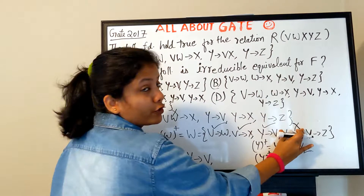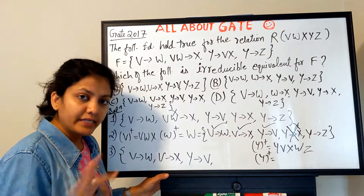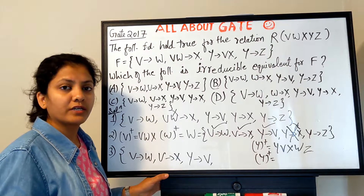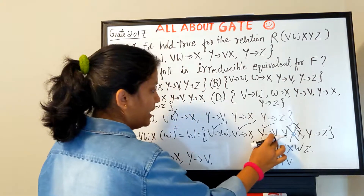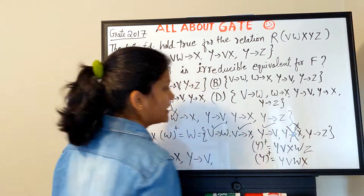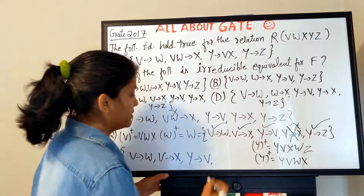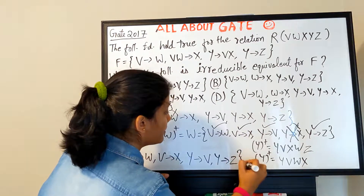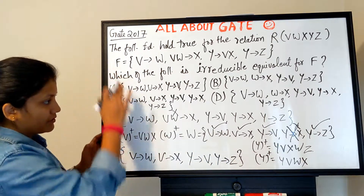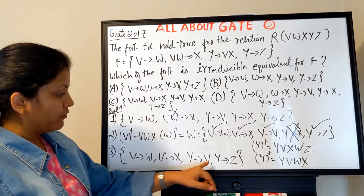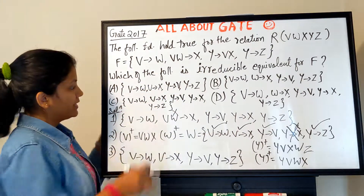Finally, hide Y→Z. Note that since Y→X was already removed, we do not use it in further computations. Y⁺ from the remaining FDs gives Y, V, W, X — but does not give Z. So Y→Z is essential and must be included. The final minimal cover is: V→W, V→X, Y→V, Y→Z.